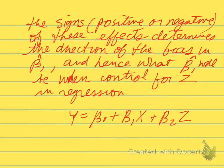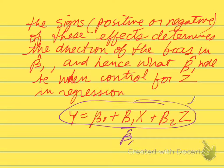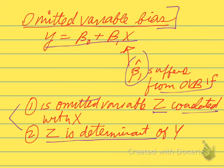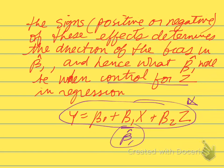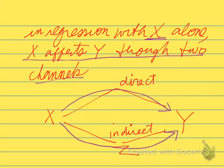Our coefficient that we estimate, beta1 hat, in a single regression equation is going to depend on the signs, positive or negative, of these effects. That will determine the bias, the nature of the bias in beta1 hat, and also what beta1 hat will be when we include the omitted variable, where we control for z in the regression. Then we'll have a new beta1 hat that we can compare with our original, and the direction of how it should change depends on the signs of this direct effect and the signs of this indirect effect.